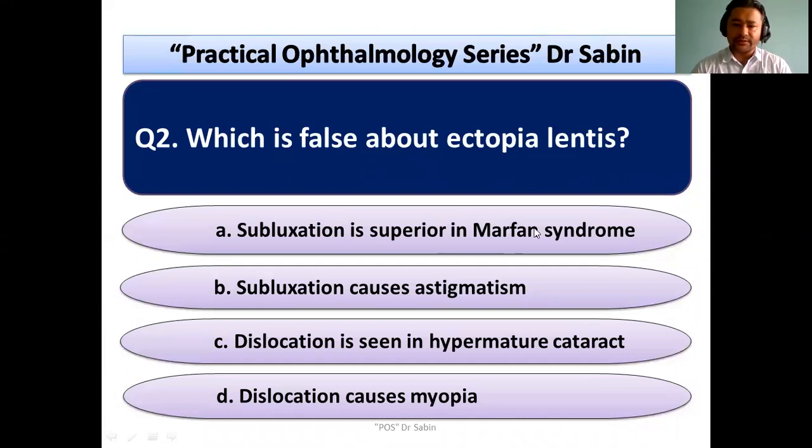Anything related to nerves, like the optic nerve and retina, they are developed from neural ectoderm. Second question is: which is false about ectopia lentis? 'Which is false' means three options are true and one option is false, which we have to find out.